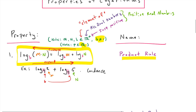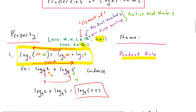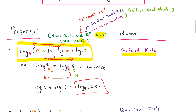So condensing log base 4 of 2 plus log base 4 of 5, we get a single log base 4 of 2 times 5. You could leave it as 2 times 5, or multiply to get 10. We'll leave it so you can see the parts. Not too bad.